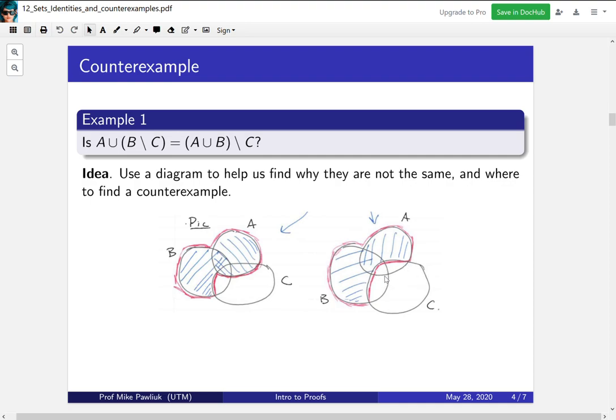So that piece right there tells us exactly where to look for a counterexample. If we're trying to show that this equality doesn't hold in general, we need to find an example of sets A, B and C where the thing on the left and the thing on the right are different. Now you could try randomly coming up with sets A, B and C and maybe they would work. But the more systematic approach is to draw the picture and that'll tell you where to look for those sets.